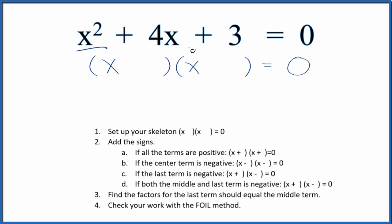Let's factor the equation x² + 4x + 3 = 0. We're going to use these guidelines to help us. The first thing we do is set up a skeleton equation like this.